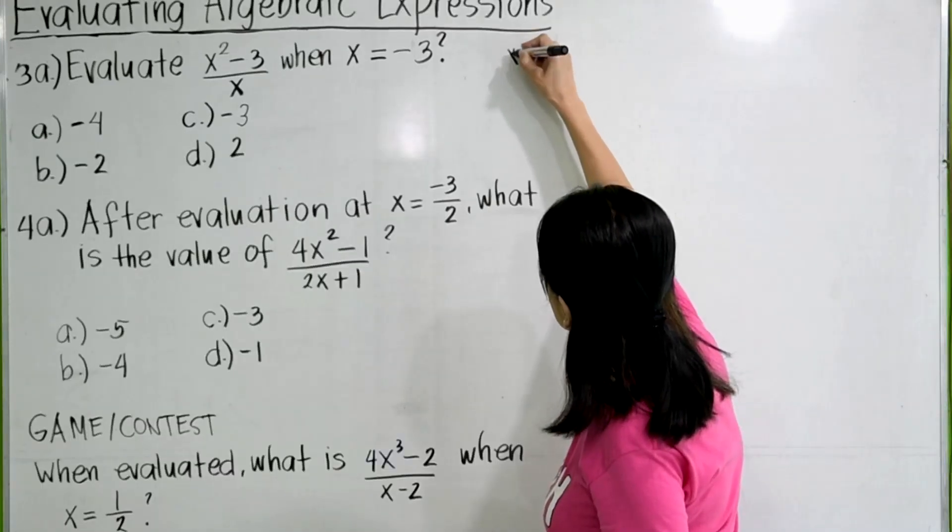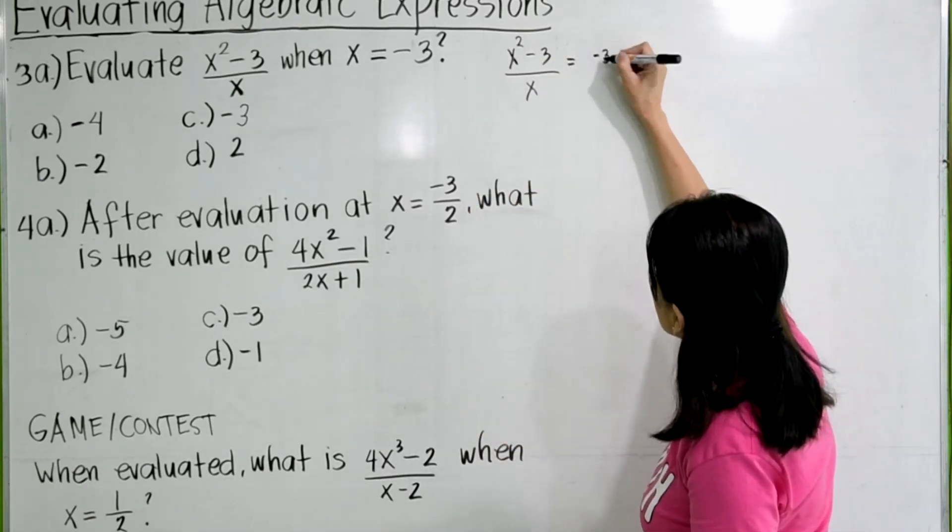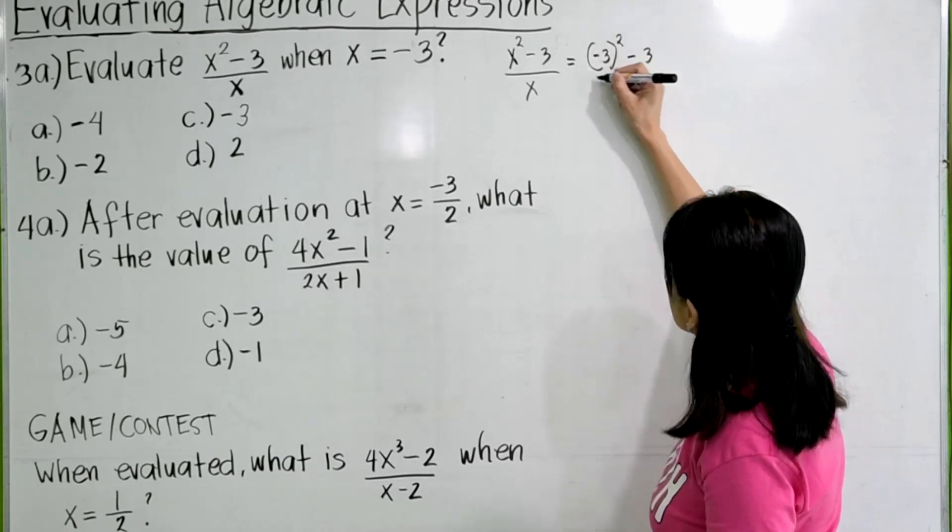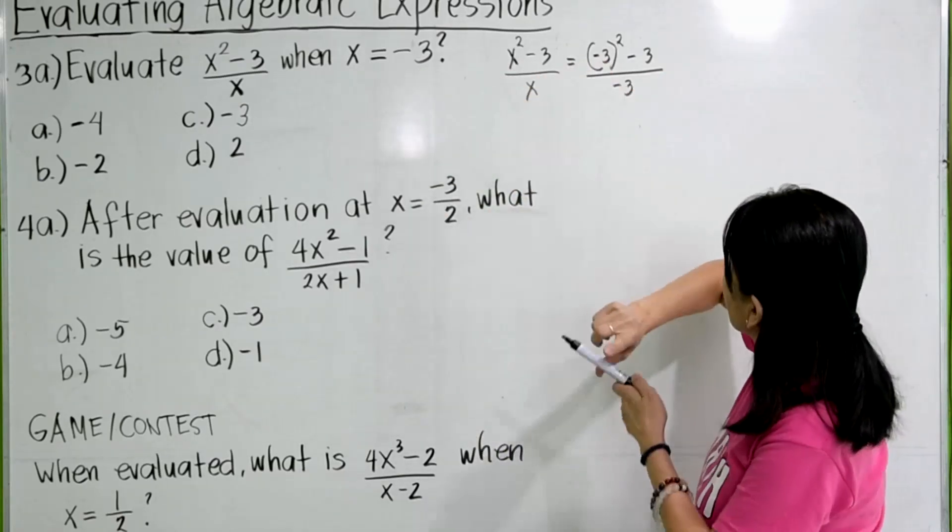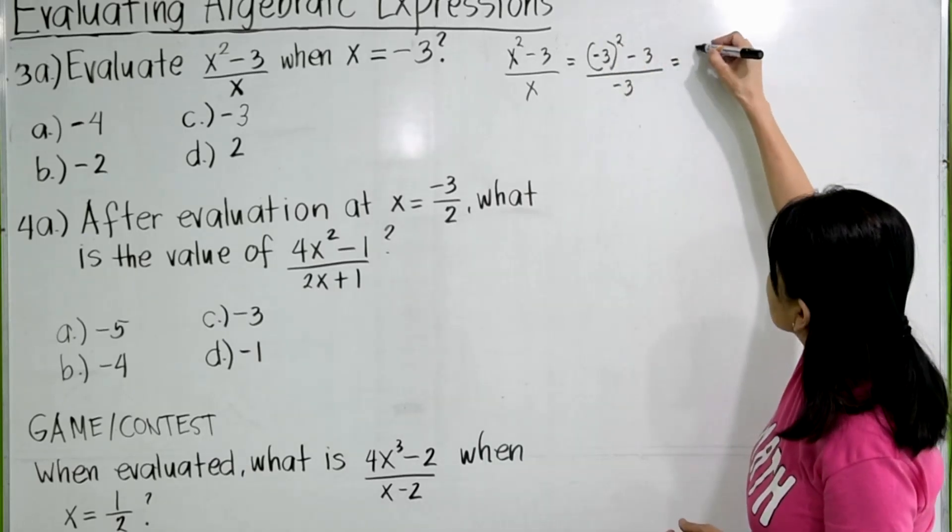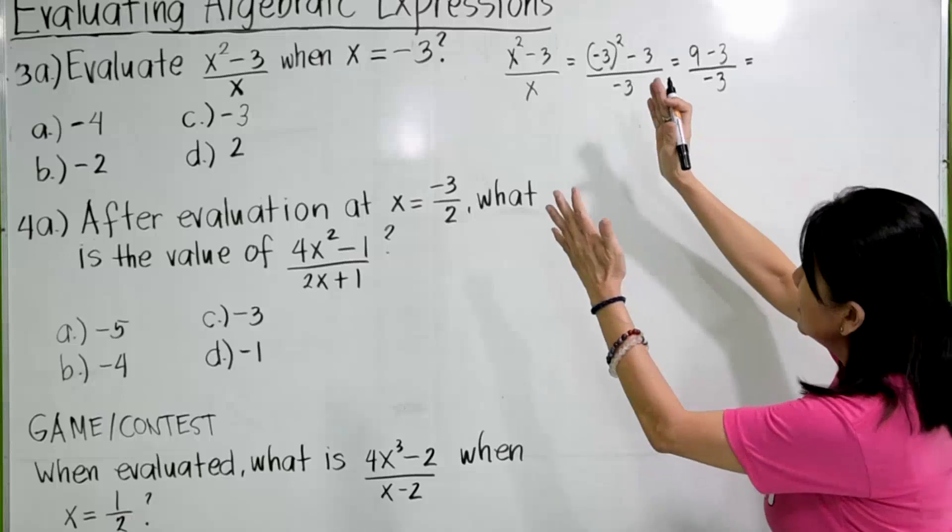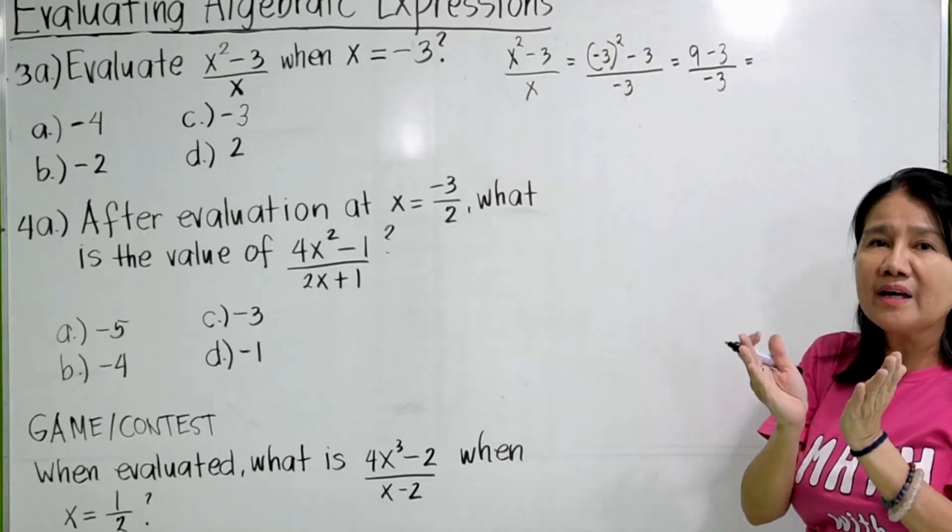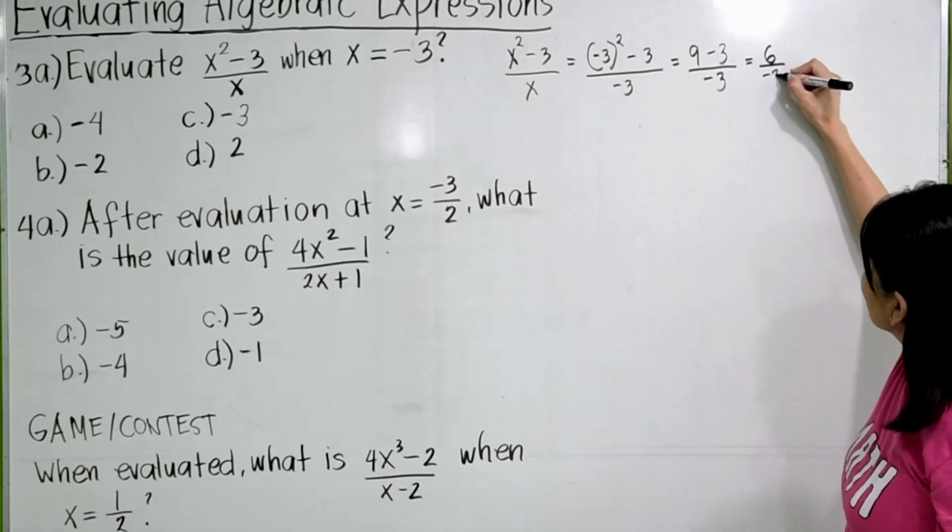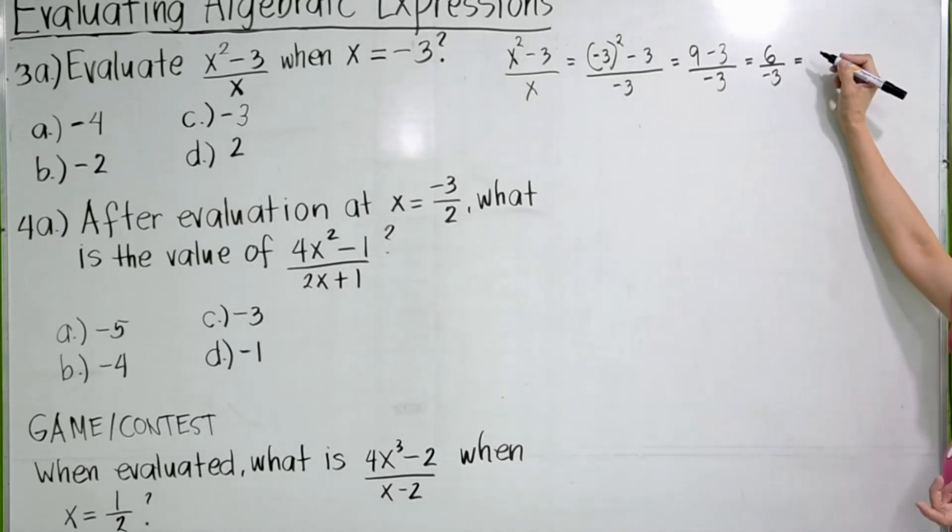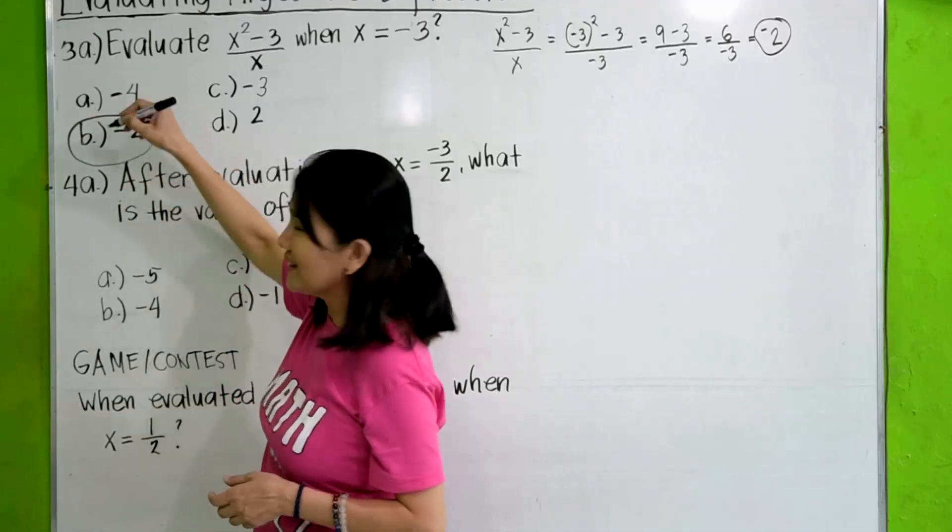Take note that this algebraic expression is a monomial. So we have to do it this way. We substitute the values. So x squared minus 3 all over x will give us negative 3 quantity squared minus 3 all over negative 3. This gives you negative 3 times negative 3 is positive 9 minus 3 all over negative 3. I was retaining the algebraic expression as a monomial. So 9 minus 3 is 6 all over negative 3, which is 6 over 3 is 2. But there is a negative sign, so our answer is negative 2. So the correct answer here is letter D.